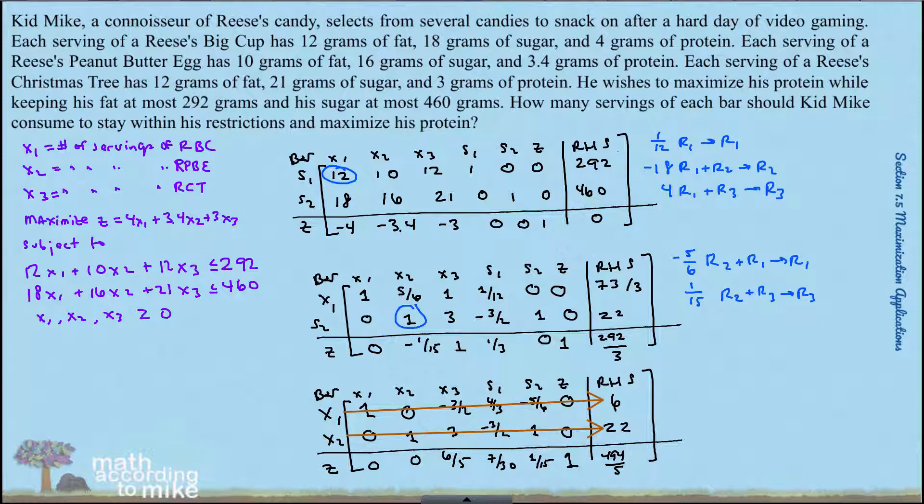So six Big Cups, 22 peanut butter eggs, and zero Christmas trees. And the maximum protein he will consume, well that's a fraction, 494 over 5. As a decimal, which would be better because it makes more sense, would be 98.8 grams.